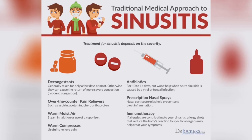How is it treated? Decongestants are used to get rid of the mucus building up and blocking your nose. You can get antibiotic treatment to subside a bacterial infection. Nasal sprays can also be prescribed, or you can take analgesics — otherwise called pain relievers — in the form of aspirin or ibuprofen.